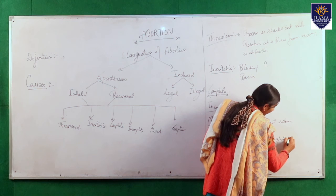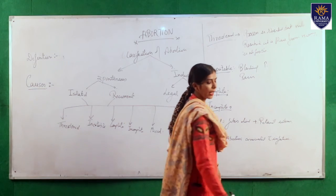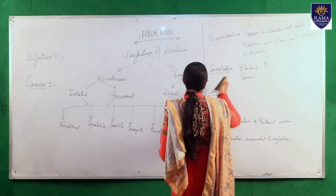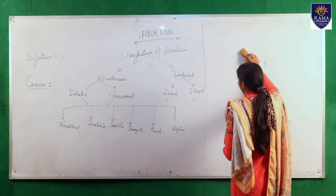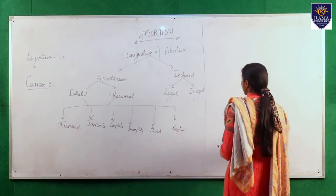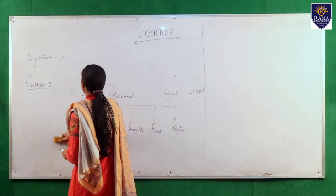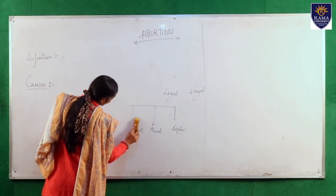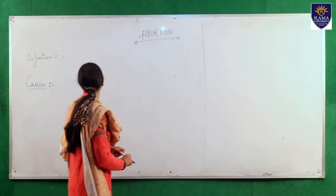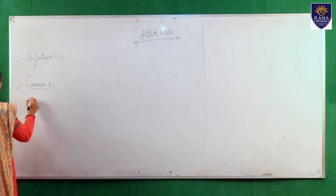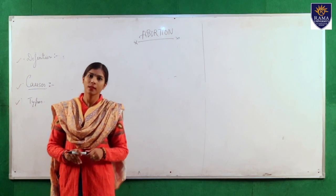Septic abortion means the abortion is associated with infection — if any infection occurs during the time of abortion, it is known as septic abortion. That's all about the types of abortion. Today we discussed the definition, causes, and types of abortion. Thank you all.